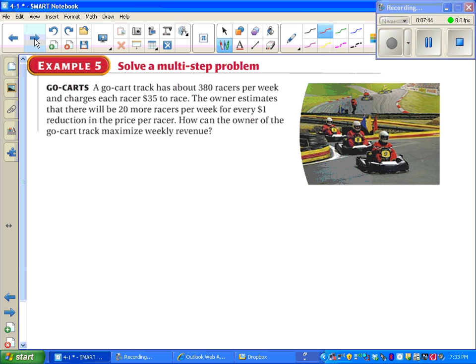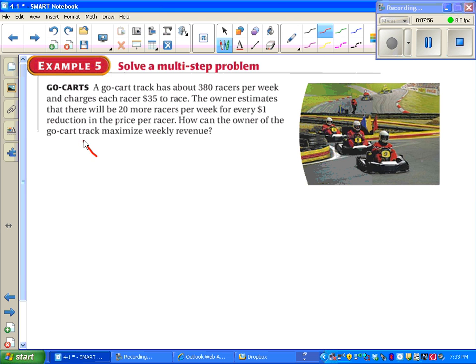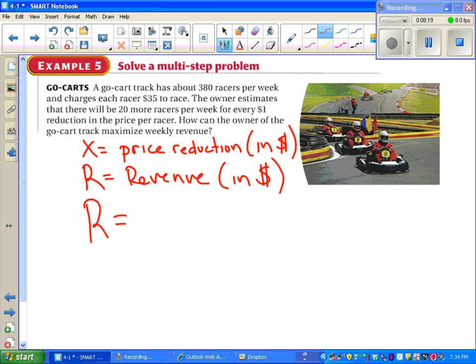Go ahead and pause the video, read this over, and see if you can figure out how to set this up. I'll be honest, this is kind of one of the harder word problems that we'll see. Looking at the problem, it looks like we have a couple of possibilities for variables. We might have something that represents the price reduction. Call that x. And depending on the price reduction, that's going to change our revenue. So we might have something else for revenue, call that R. Setting up this first equation isn't too bad. I notice that we've got a total revenue in one scenario is $35 per person that's racing and 380 racers per week. That's how much this guy is making right now at his race car go-kart track.